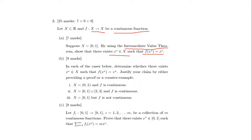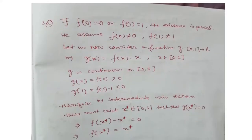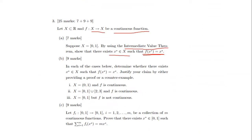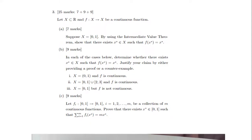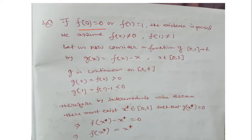Now let's move on to how the Intermediate Value Theorem is used here to find x* such that f(x*) = x*. The question says X maps to R; using the Intermediate Value Theorem, show that f(x*) = x*. So if f(0) = 0 or f(1) = 1, the existence is already proved.